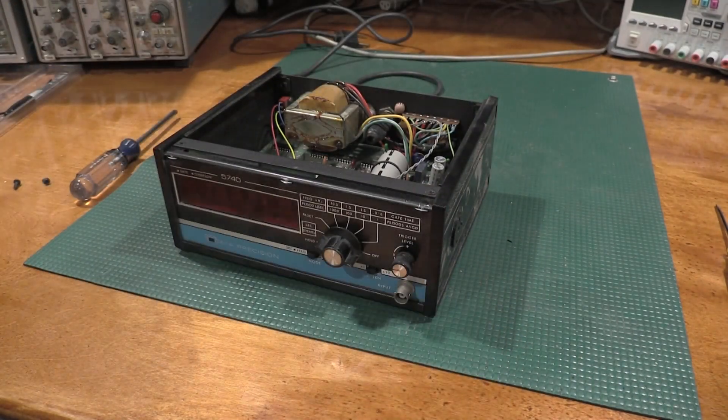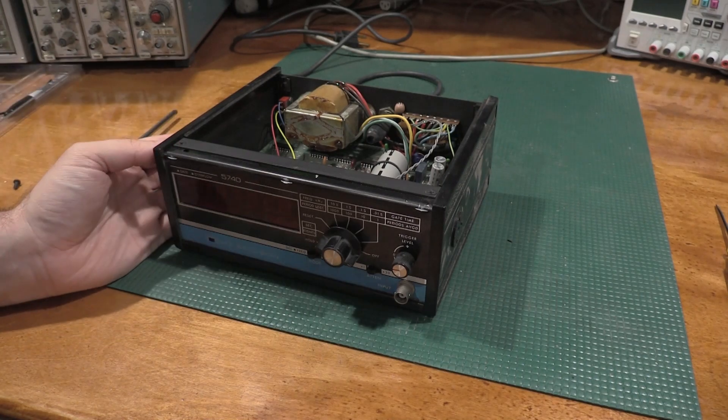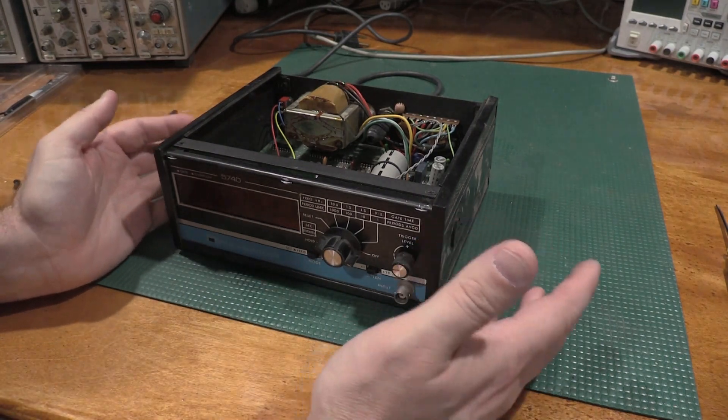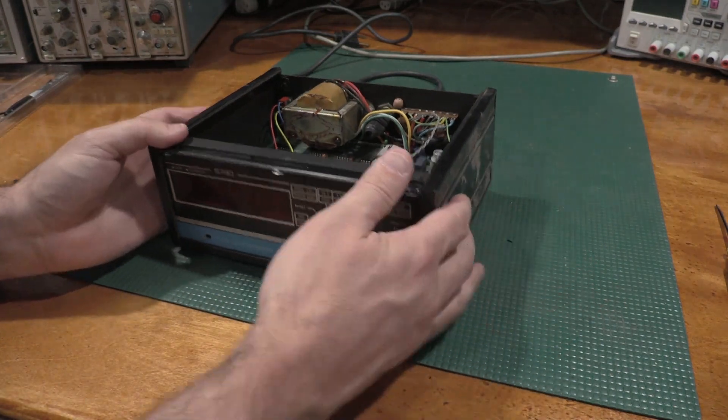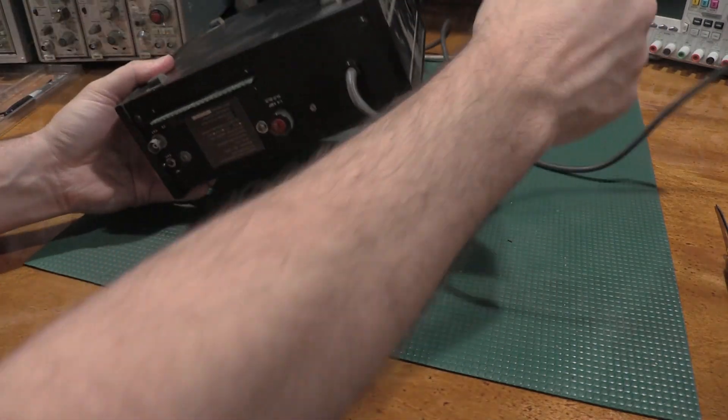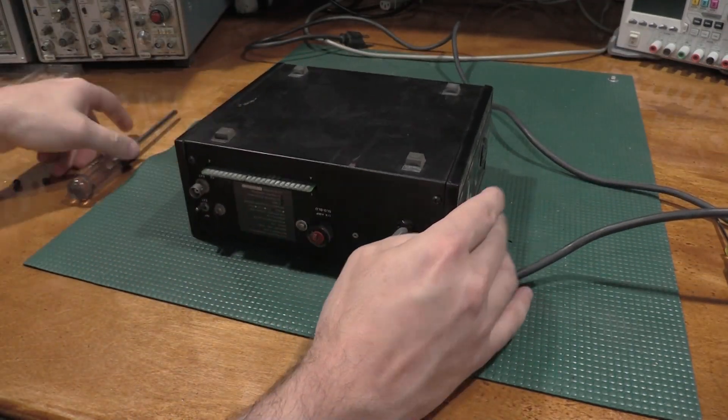I checked the data sheet of the counter and this is actually a hundred megahertz counter. So this is perfect for me to couple with the 7603, that being a hundred megahertz scope. Let's get the bottom off of this and we'll get some caps replaced and get this thing fired up, see if it counts something.